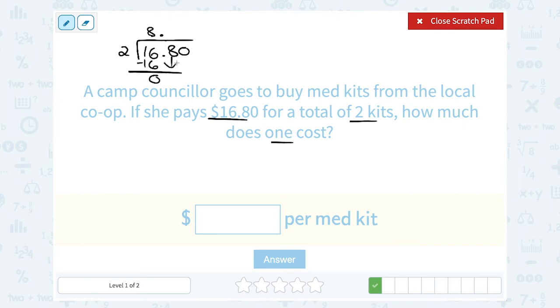I'm going to bring down my digit of eight. How many times does two go into eight? Two goes into eight four times. Two times four is eight.